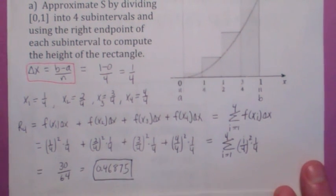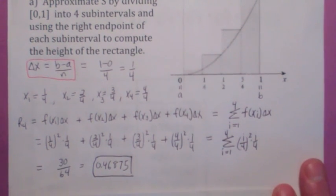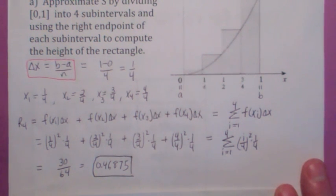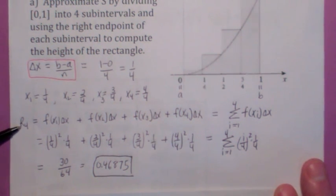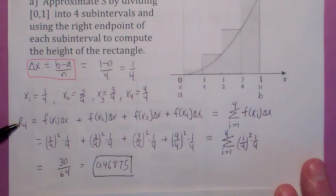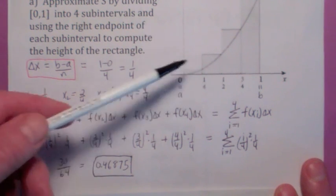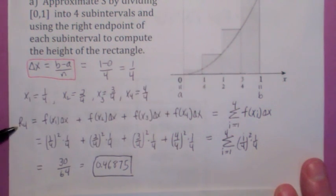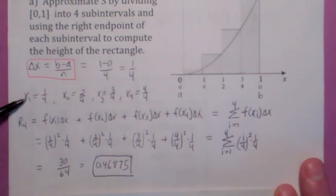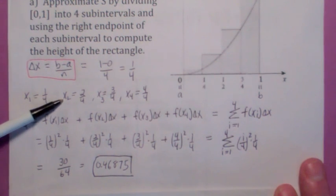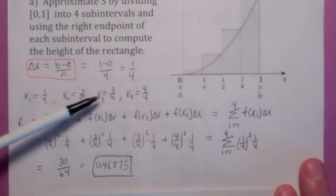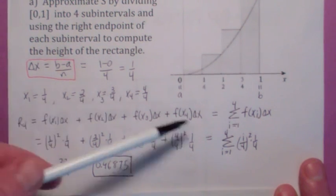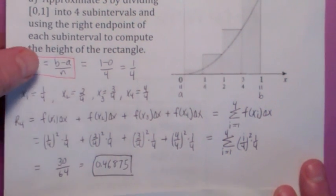If you were to compute that, you get 0.46875. This is called R sub 4. If you use the left endpoint of each subinterval instead of the right, we'd call that L sub 4. So x sub 1 would be 0, x sub 2 would be 1 fourth, and so on, and your answer would be a little bit different.